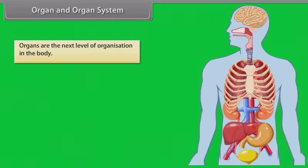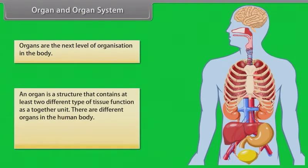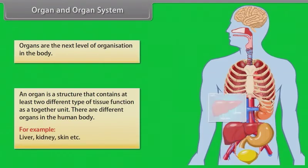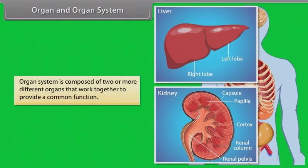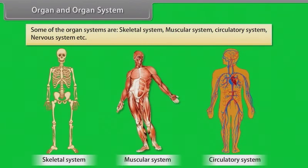Organ and organ system. Organs are the next level of organization in the body. An organ is a structure that contains at least two different types of tissue functioning together as a unit. There are different organs in the human body — for example, liver, kidney, skin, etc. An organ system is composed of two or more different organs that work together to provide a common function. Some organ systems are: skeletal system, muscular system, circulatory system, and nervous system.